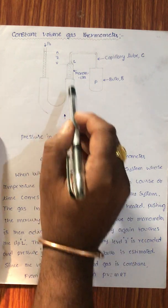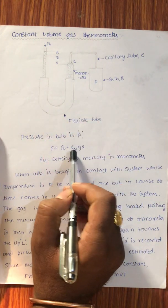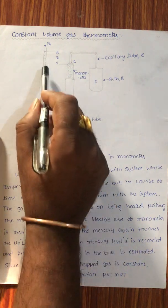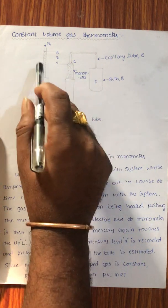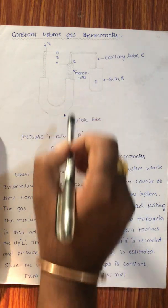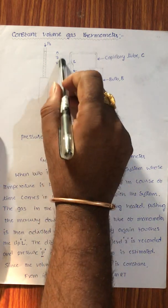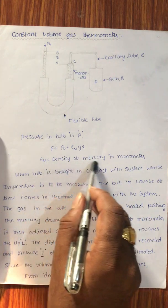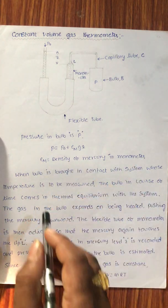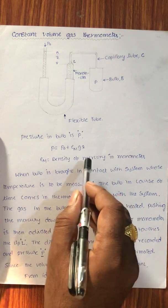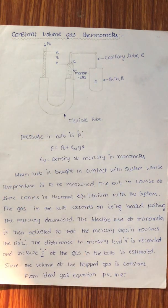ρ_M means density of manometric fluid. Inside the limb manometer, the manometric fluid is there. So manometric fluid times gZ — that is the height. Mostly we use mercury as the fluid in the manometer.